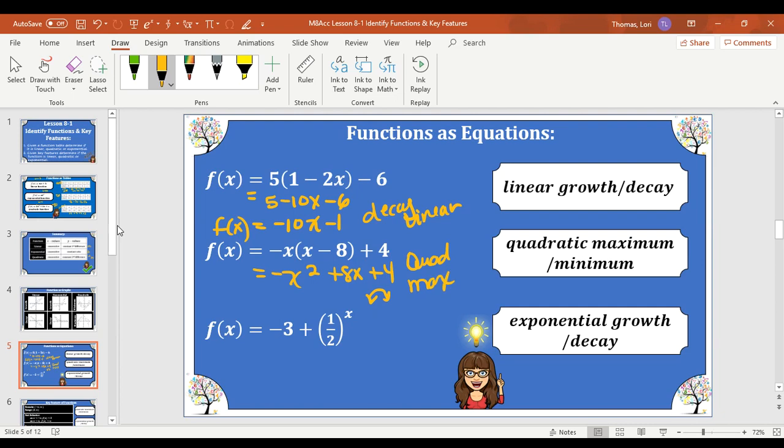And then here we can see where there's nothing really to simplify, but I am going to write this in standard form. And we can see it's exponential. And since our b value is between 0 and 1, it is a decay.